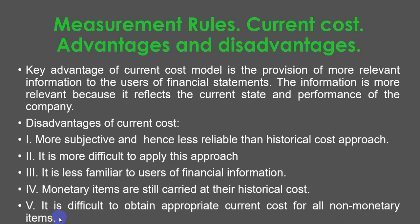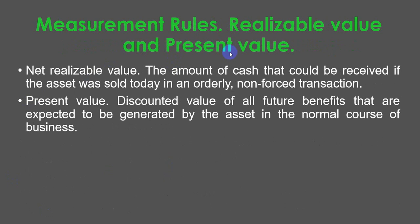It is also difficult to obtain appropriate current costs for all non-monetary items. Realizable value and present value: net realizable value is the amount of cash that could be received if the asset was sold today in an orderly — meaning non-forced — transaction. Present value is the discounted value of all future benefits expected to be generated by the asset in the normal course of business.